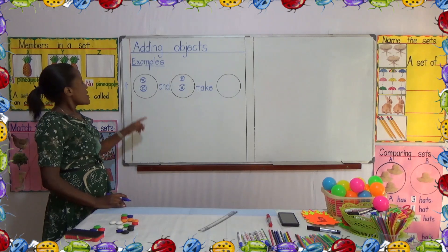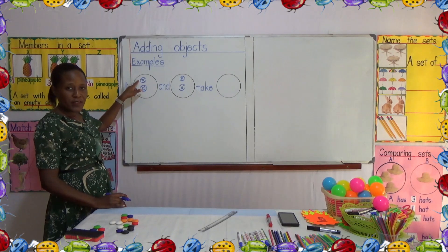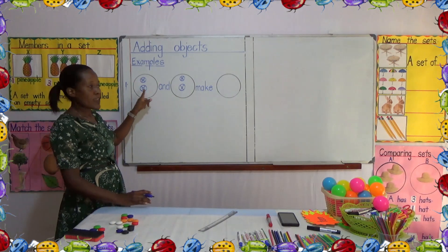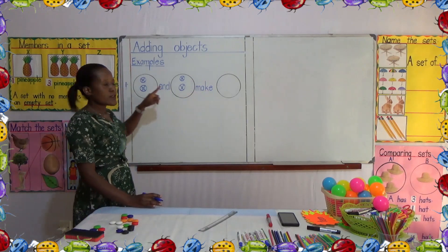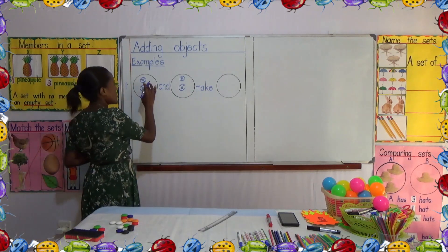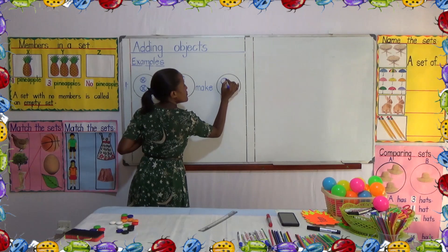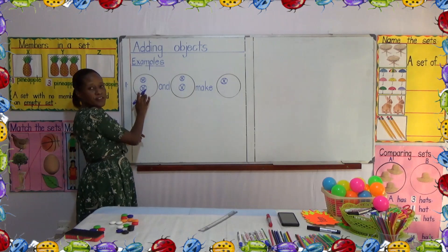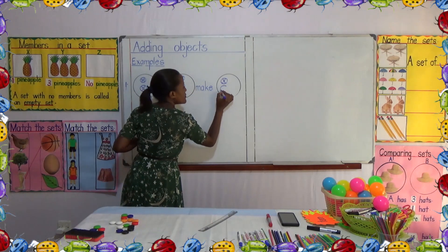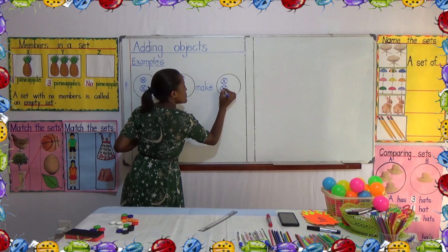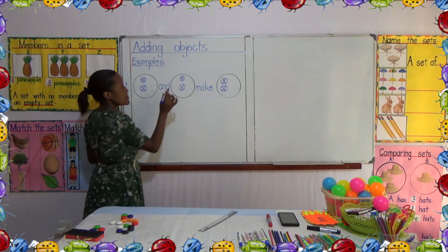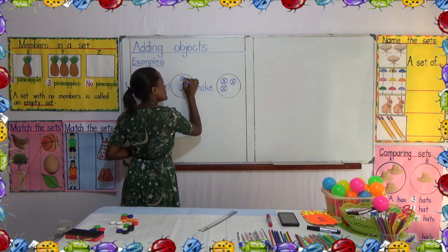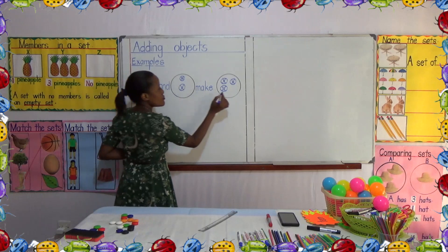Now, we shall do what we did the other time — put all the objects here in that set. So we are going to get that ball, mark it, then take that one, mark it, take that other one, and the last one there.